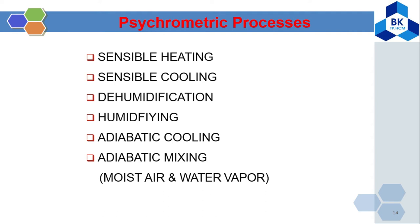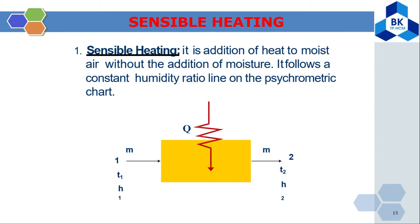Now the psychrometric processes. We have: sensible heating, sensible cooling, dehumidification, adiabatic cooling, adiabatic mixing, and mixing of moist air and water vapor. Sensible heating is the addition of heat to moist air without the addition of moisture — it follows a constant humidity ratio line on the psychrometric chart. At the first stage the temperature is T1 and enthalpy is H1; at the second stage the temperature increases and enthalpy becomes H2. Because no water is added, the humidity ratio remains constant: W1 = W2, and the line from state 1 to 2 is parallel to the temperature axis.